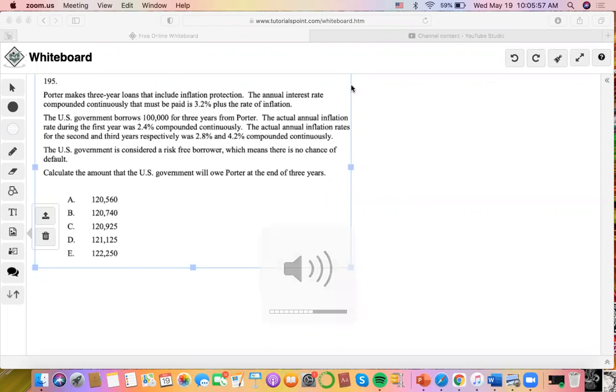Okay, so for this problem, Porter makes loans that include inflation protection, and the rate compounded continuously that must be paid is 3.2% plus the rate of inflation.